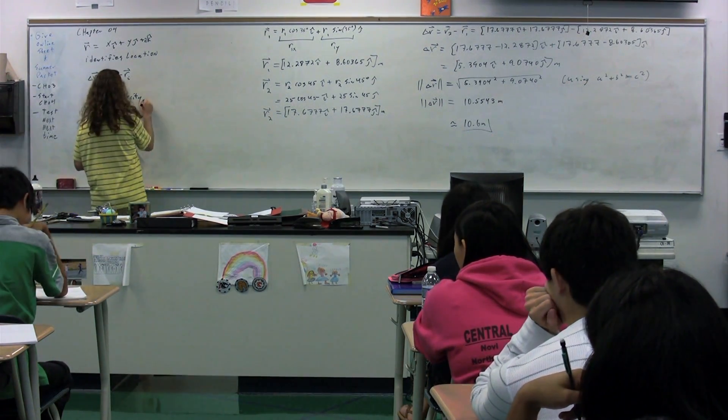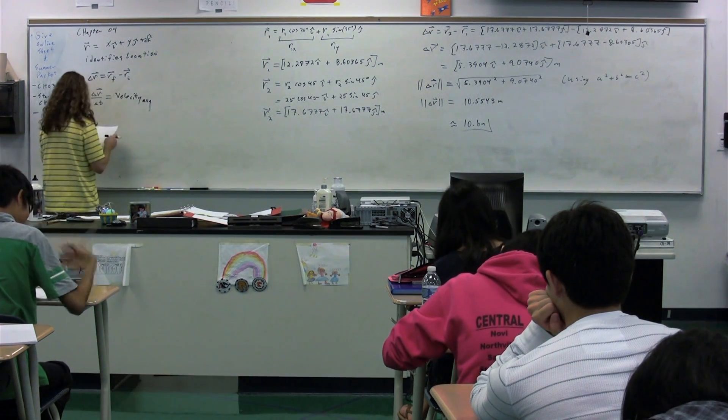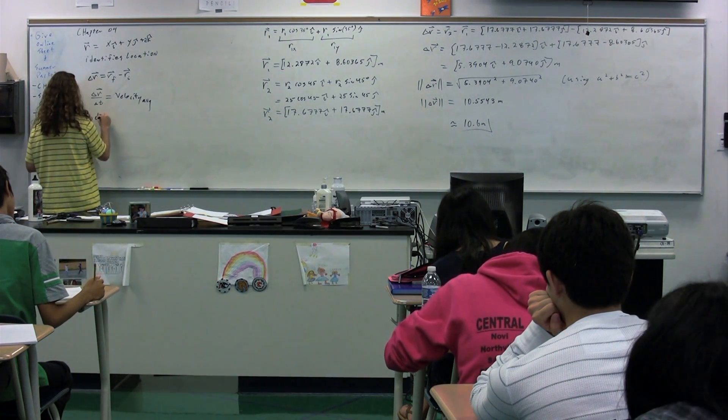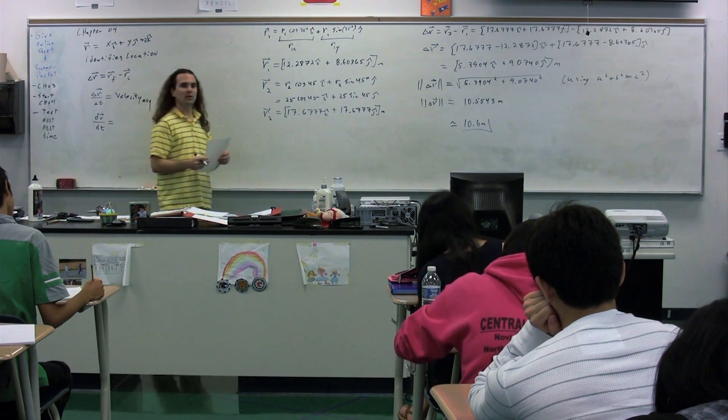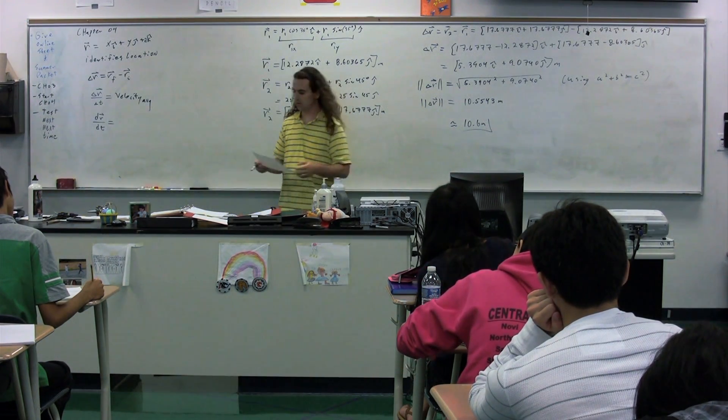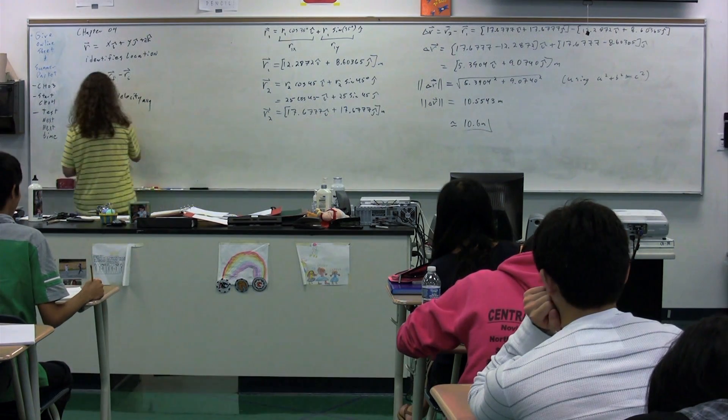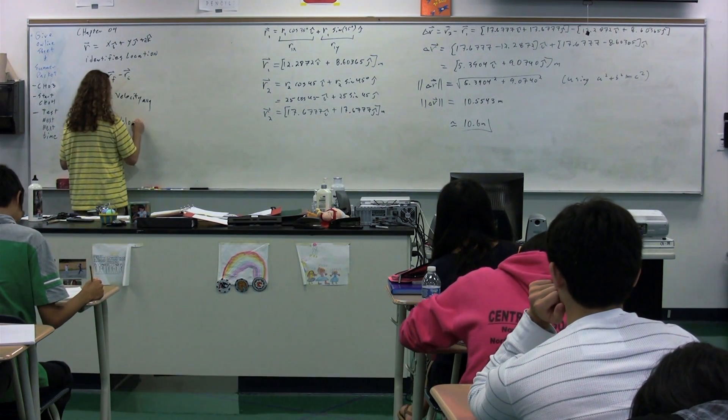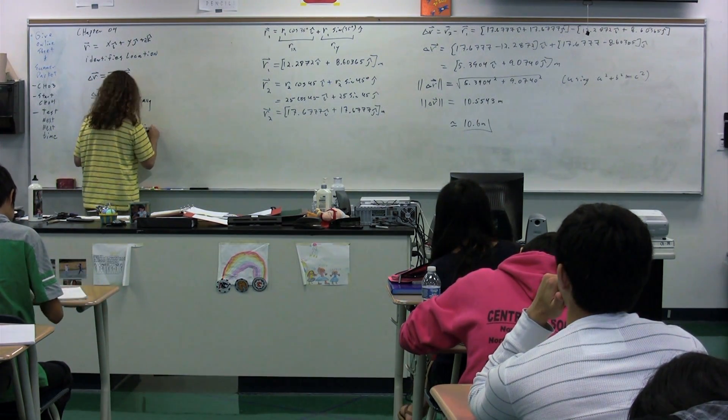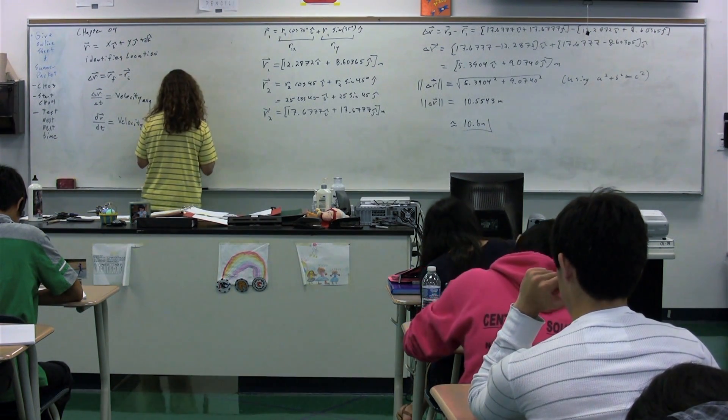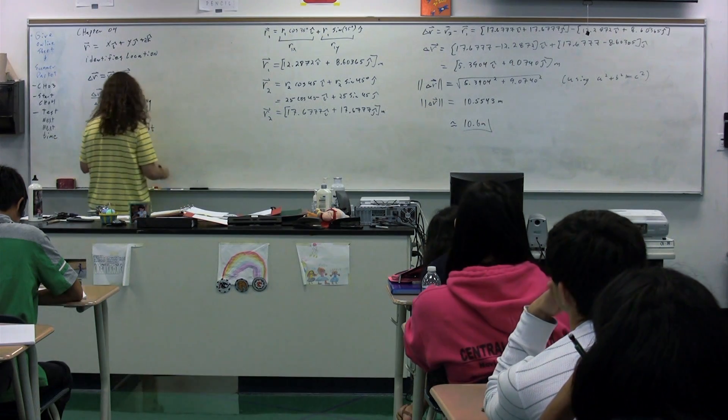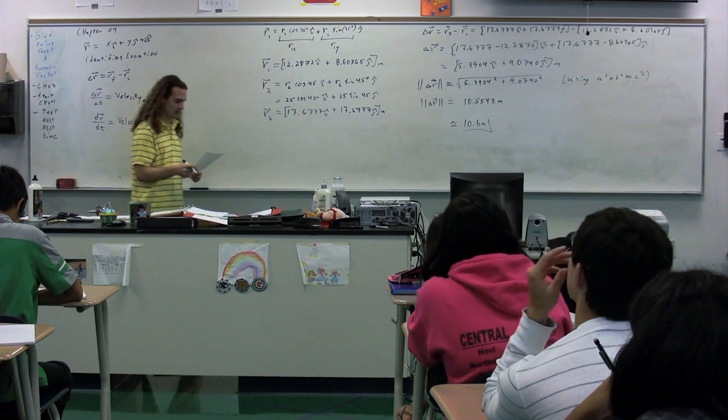This would be the average velocity. We could also have dr dt, which would be what, Jessica? Instantaneous velocity. This would be the velocity instantaneous. And of course, we could then have dv dt and delta v over delta t as well.